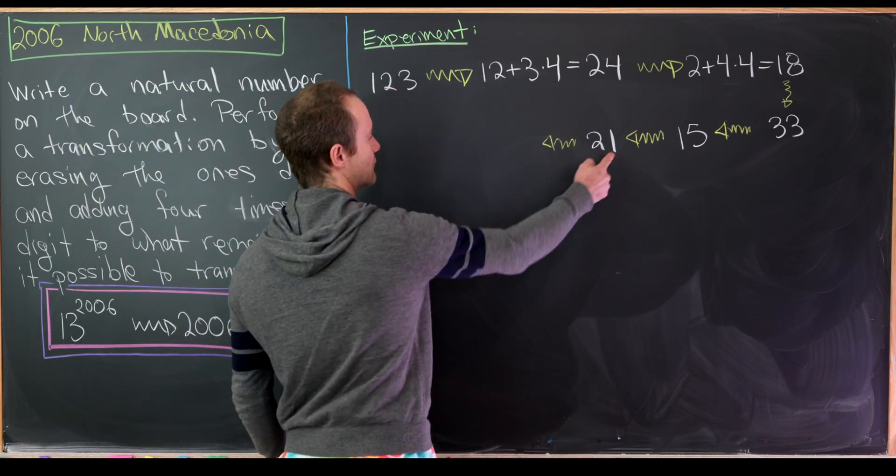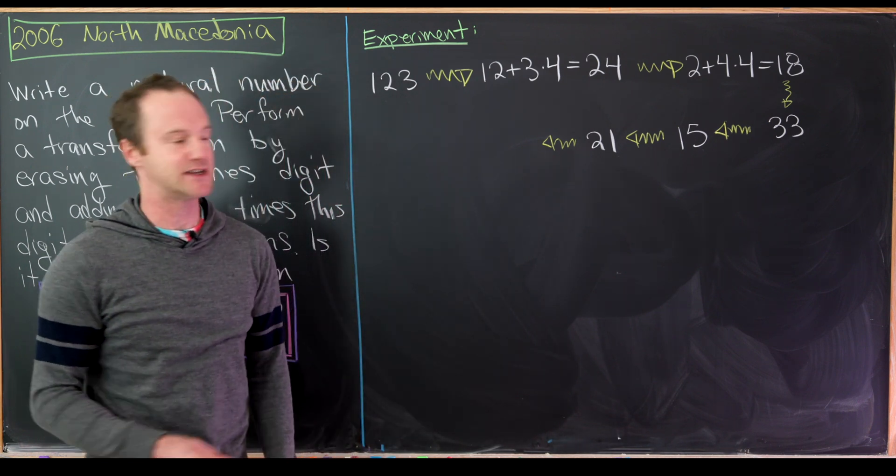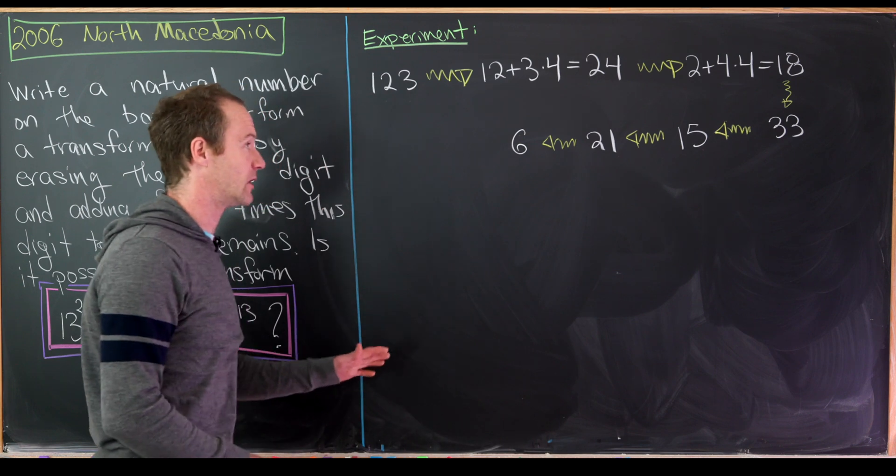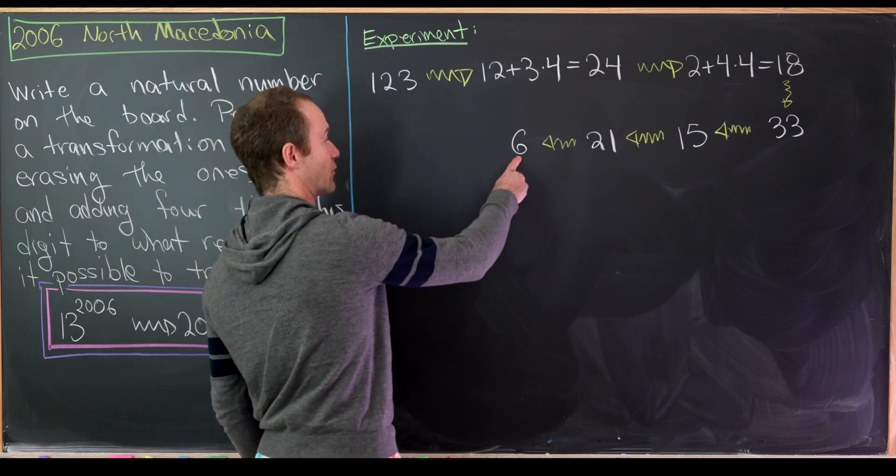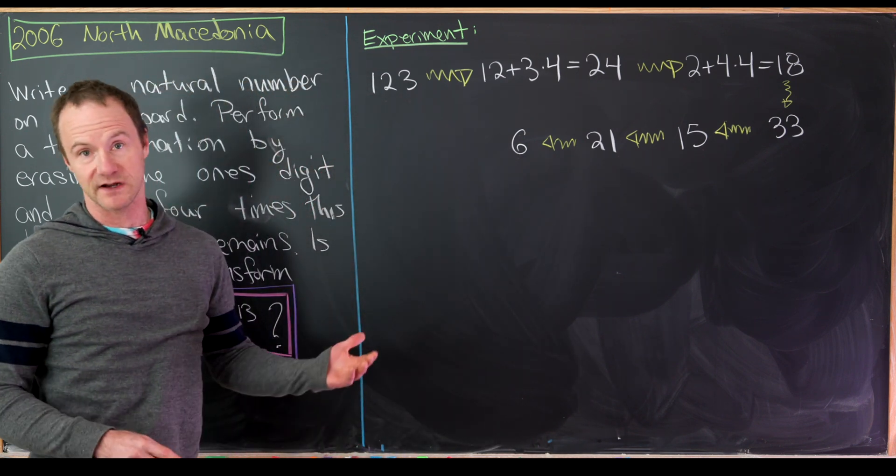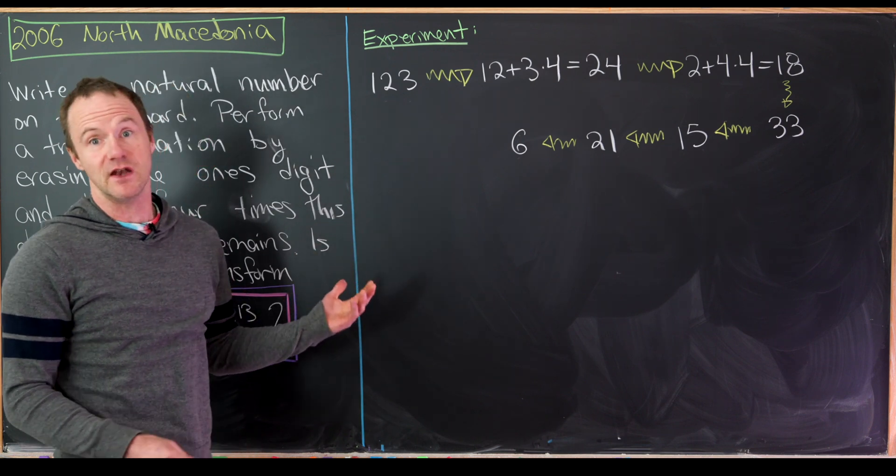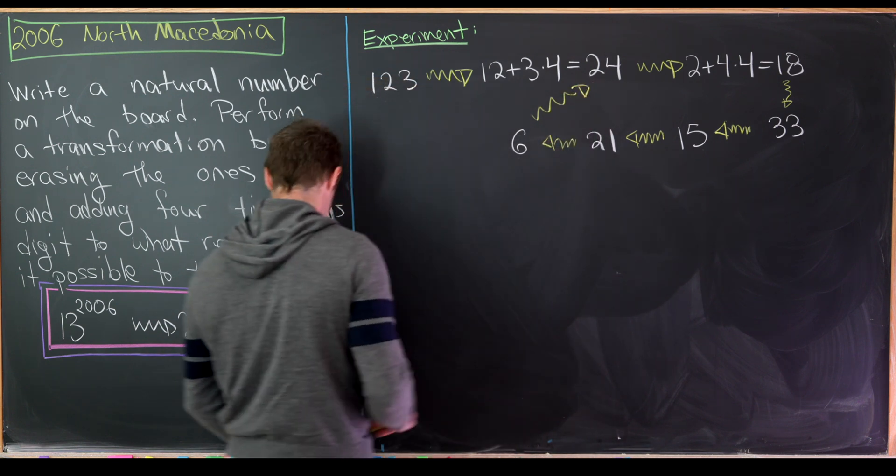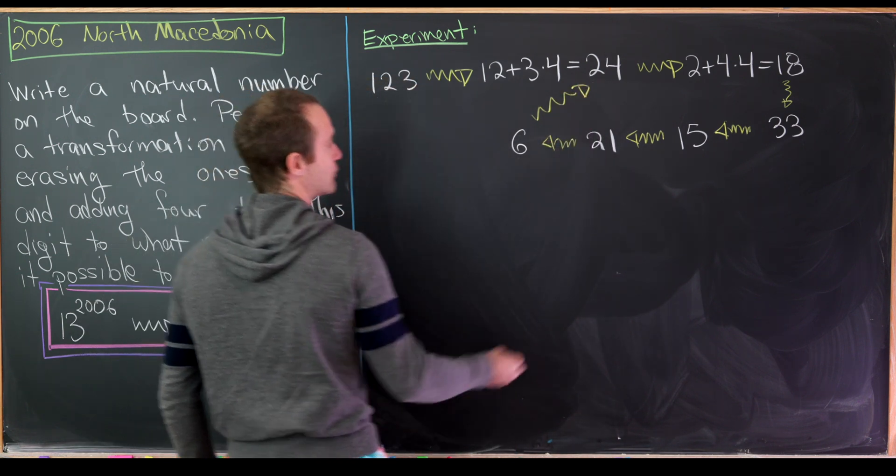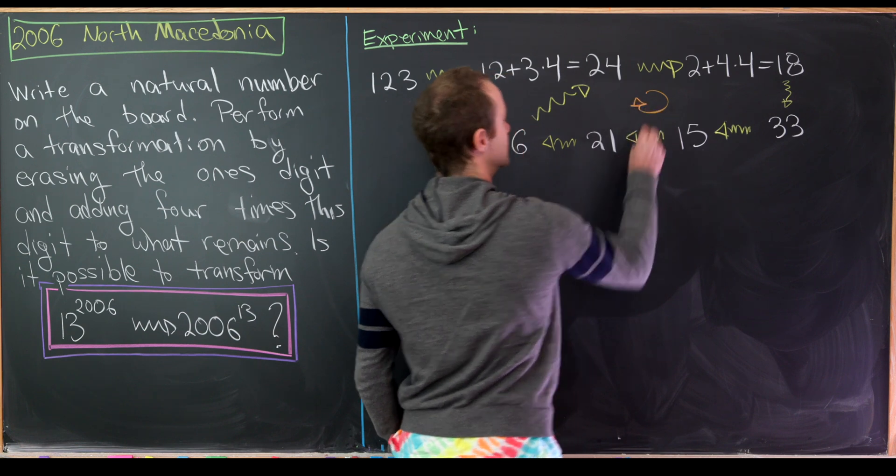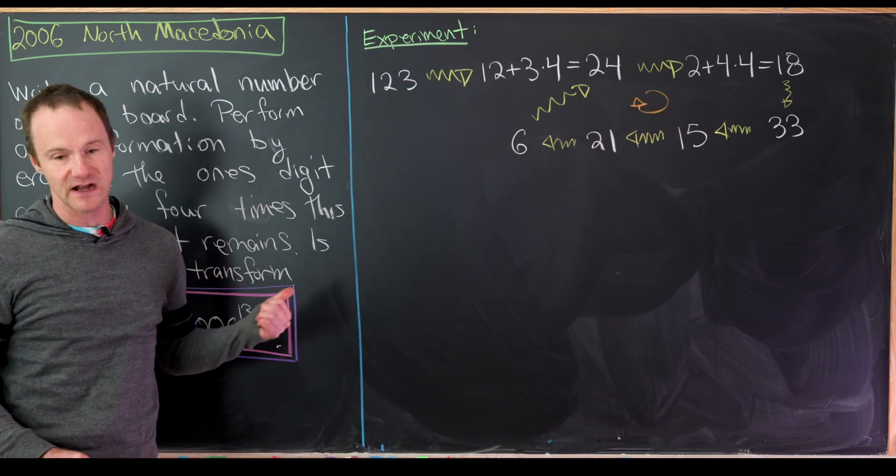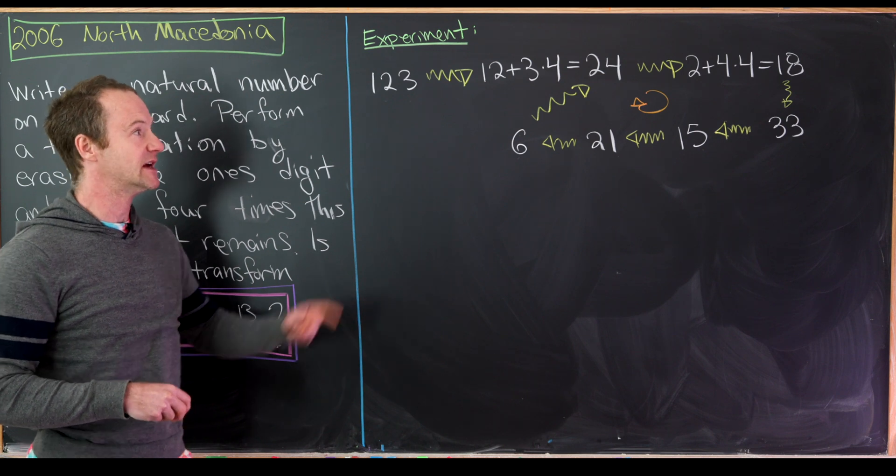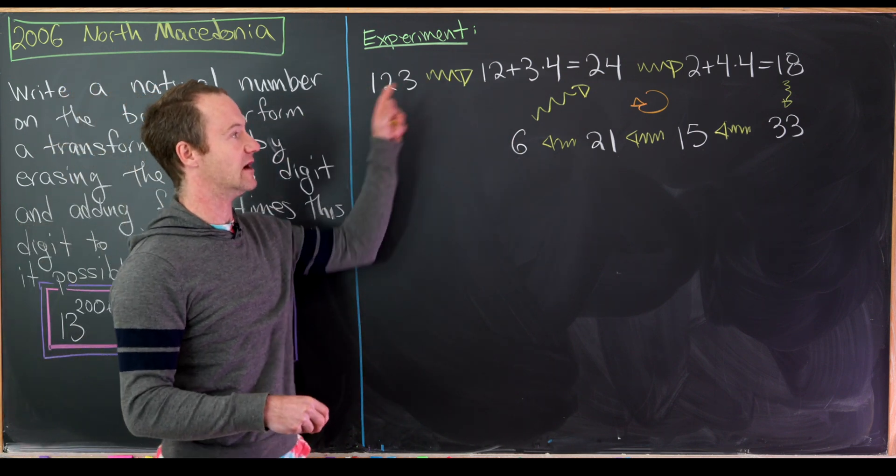Then after a couple more steps something interesting happens. We'll erase the 1, multiply it by 4, add it to 2 that gives us 6. And then if we erase 6, multiply it by 4 and add it to nothing remaining, we transform this back into 24. We've created this nice loop. Since we've created this loop, any pattern that we might see has got to be inside of this picture.